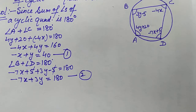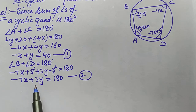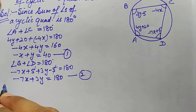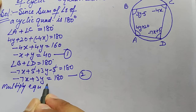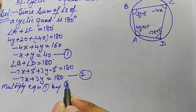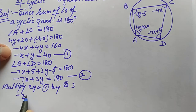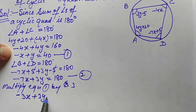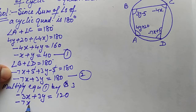We will solve the first and second equations using the elimination method. Multiplying equation 1 by 3 gives the coefficient of y as 3 in both equations. So equation 1 becomes: −3x + 3y = 120, and equation 2 remains: −7x + 3y = 180.